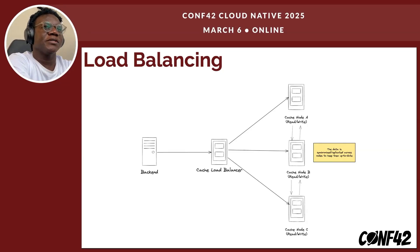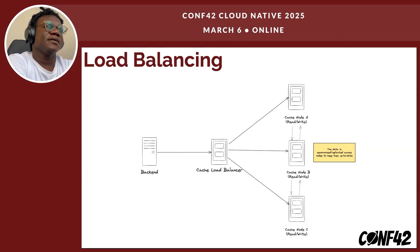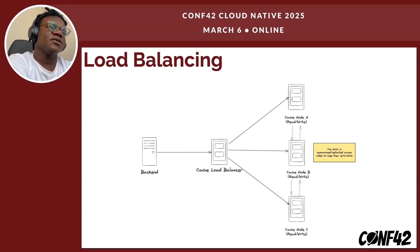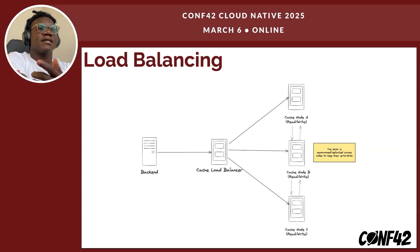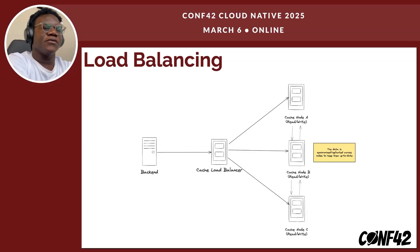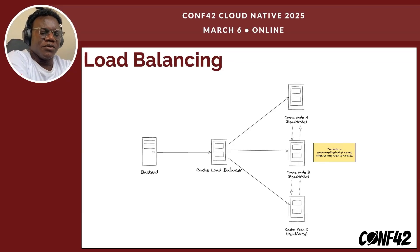With round robin, if we have five requests to our cache load balancer, the first request goes to node A, the second to node B, the third to node C, the fourth back to node A, and so forth. That's how round robin works in a nutshell.